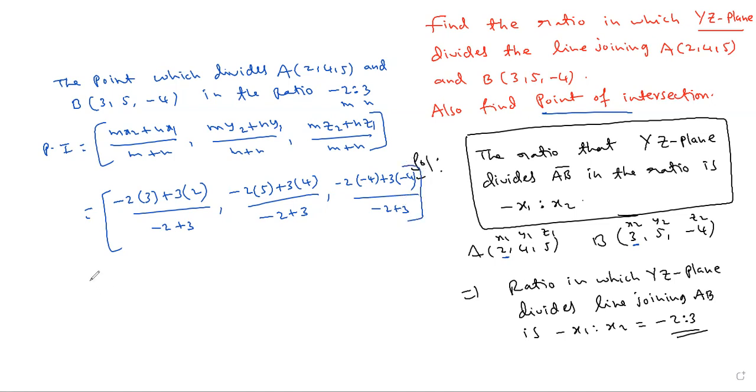Section formula applied. So which gives minus 6 plus 6, minus 6 plus 6 by 1, comma, here it is minus 10 plus 12 by 1, comma, here it is a minus. For Z1 it is 5. X1, Y1, Z1 is 5.